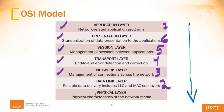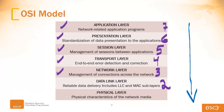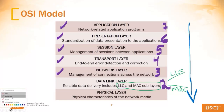Now the data link layer is kind of interesting. We're going to put a highlight here and focus on the LLC and MAC sub-layers right here. We're going to draw two little lines — on the top one we're going to put logical link control, which is what LLC stands for. On the bottom one we're going to put MAC, media access control — that's where the MAC address comes from. What we're going to be able to see is that the data link layer is actually the only layer that has sub-layers.